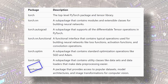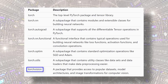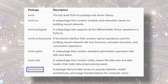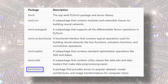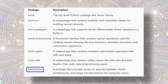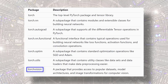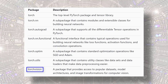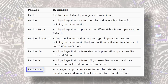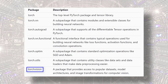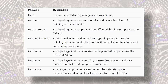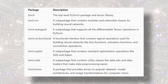torch.utils is a sub-package containing utility classes like datasets and data loaders that make data pre-processing much easier. Finally, TorchVision is a separate package providing access to popular datasets, model architectures, and image transformations for computer vision. Throughout this series, we'll be working with all of these packages, and by the end of our first project, you'll be very familiar and comfortable with all of them.